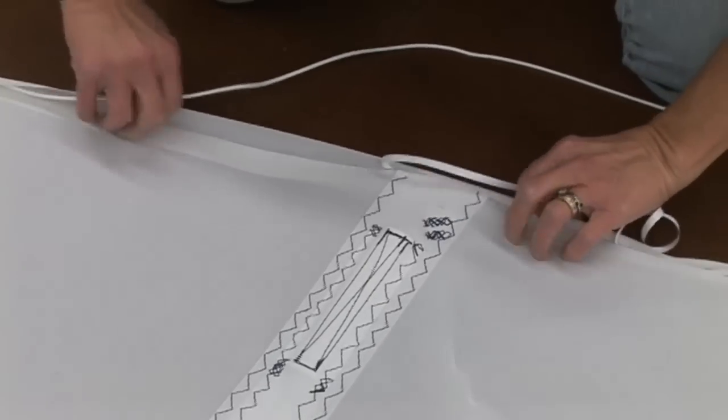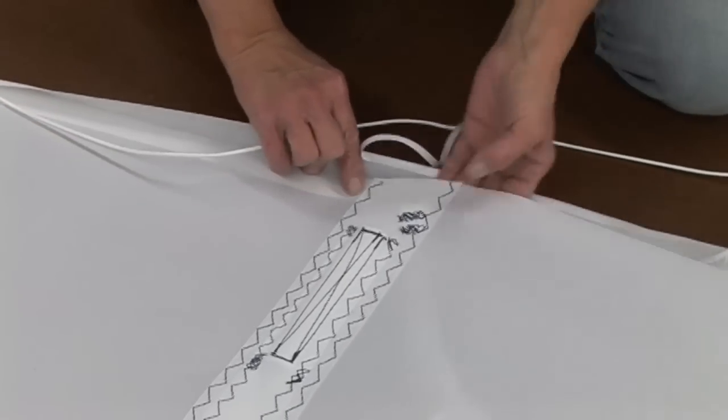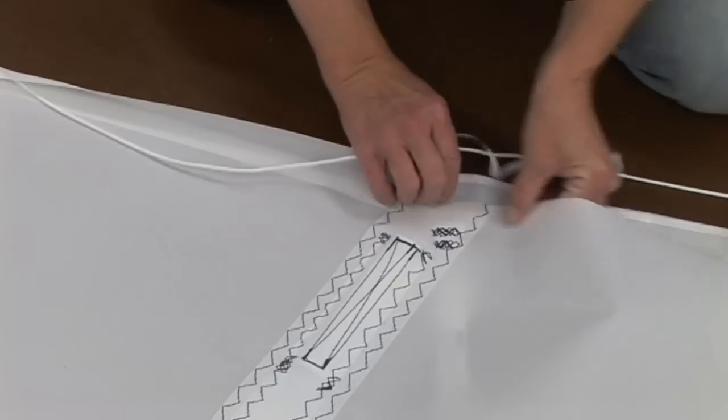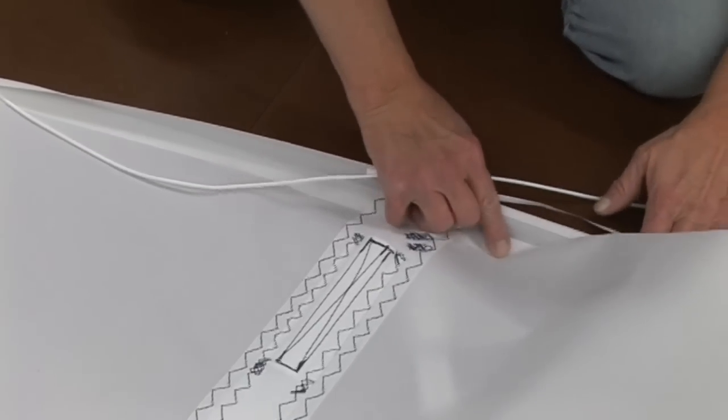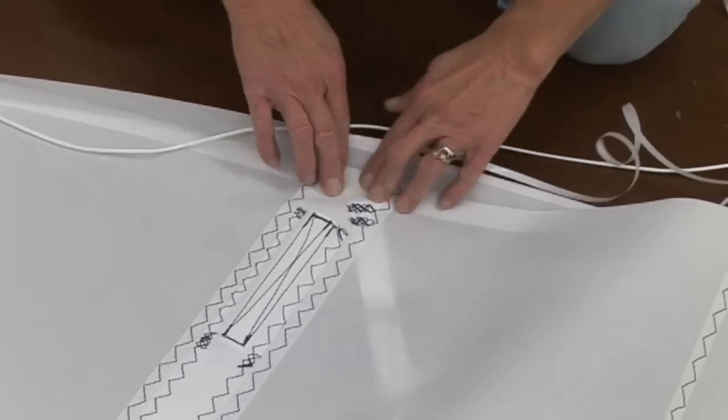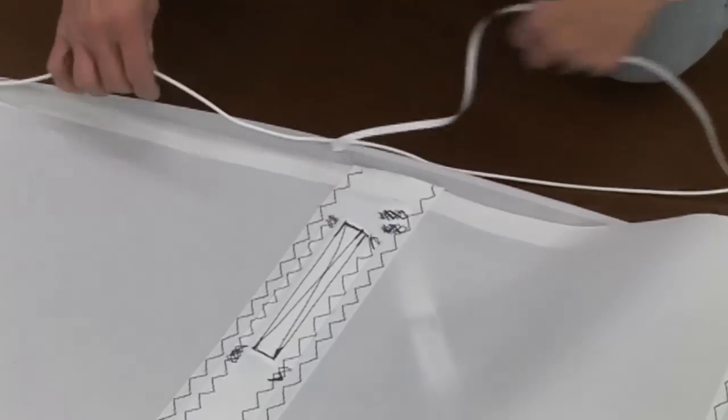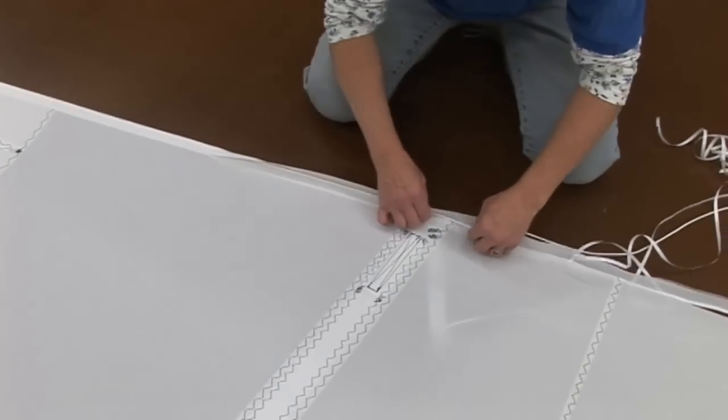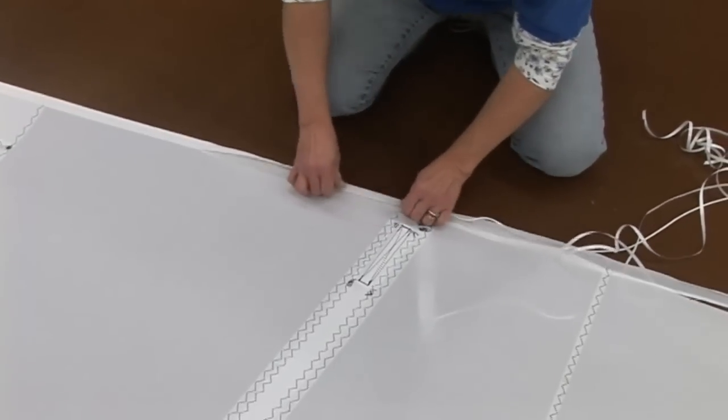So you can install the Dacron leach tape without it interfering. You can see on this batten pocket that the webbing that has Velcro on it that is inserted in the pocket has been pushed back away from the sail edge.